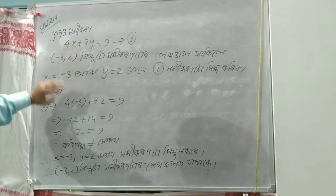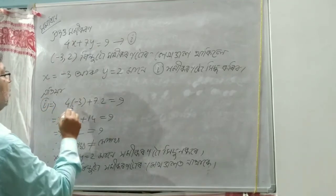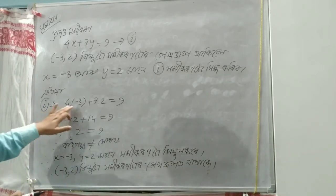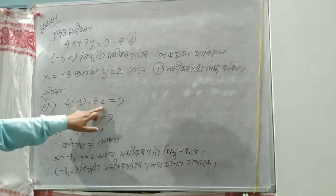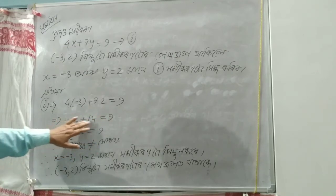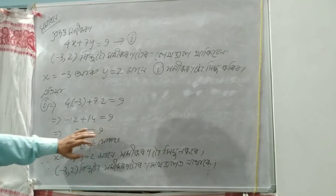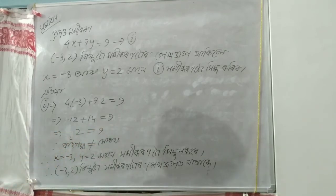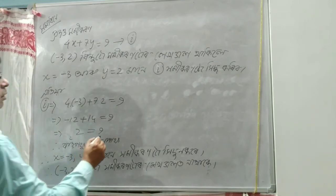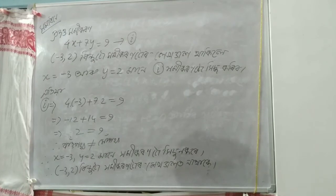4x is equal to minus 3, so 4 into minus 3. 7y is equal to 7 into 2, which is equal to 9. 4 into minus 3 is minus 12, and 7 into 2 is 14, so minus 12 plus 14 is equal to 9. Therefore, x is equal to minus 3 and y is equal to 2.